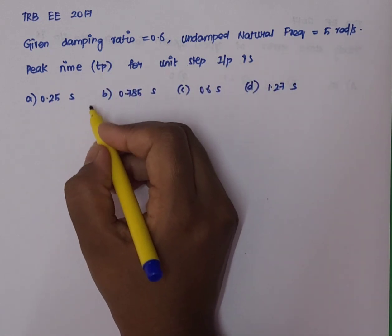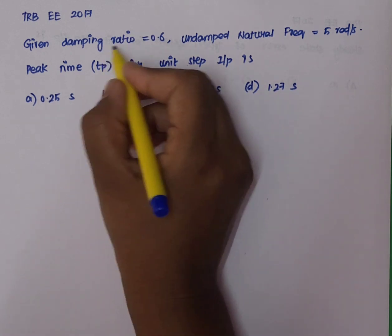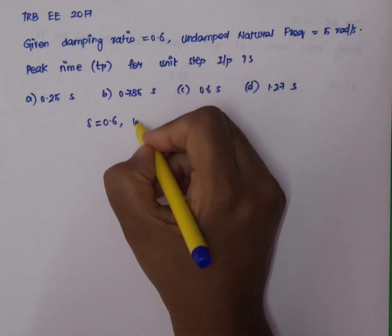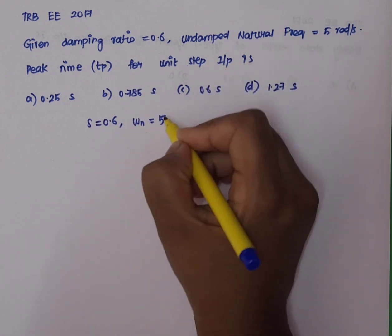So, let's see how we can get the answer. Damping ratio ζ is equal to 0.6 and natural frequency ωN is equal to 5 radians per second.